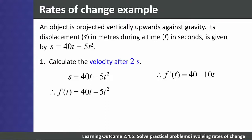We need the velocity at 2 seconds, so we substitute t = 2 into the derivative: 40 - 10(2) = 20 meters per second.